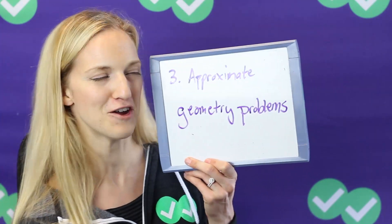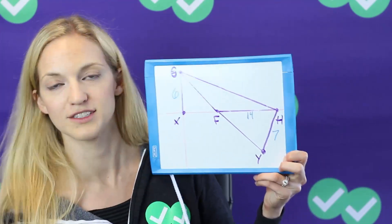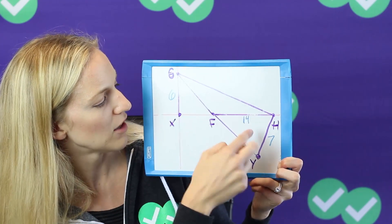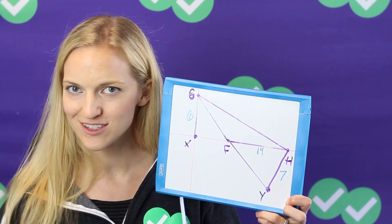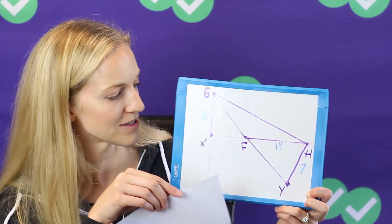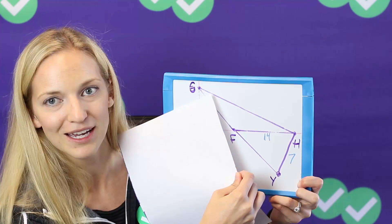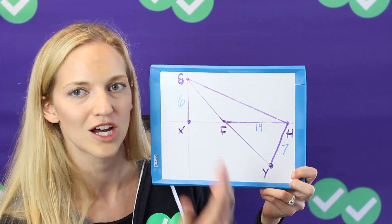Finally, number three is to approximate geometry problems. This is one of my favorite strategies on the ACT. The geometry diagrams you're going to see are pretty much drawn to scale — unlike the SAT, which often says diagrams are not drawn to scale. So you can assume they are drawn to scale. Let's say we have a figure and the question asks you to find the length of GF. We have other lines marked: 6, 14, and 7. A handy trick is to take the corner of your answer sheet and make light pencil marks to create a little ruler, measuring 14 or 6, then put it up against GF. You'll likely be able to narrow it down to two answer choices, if not find the exact answer, just by measuring.